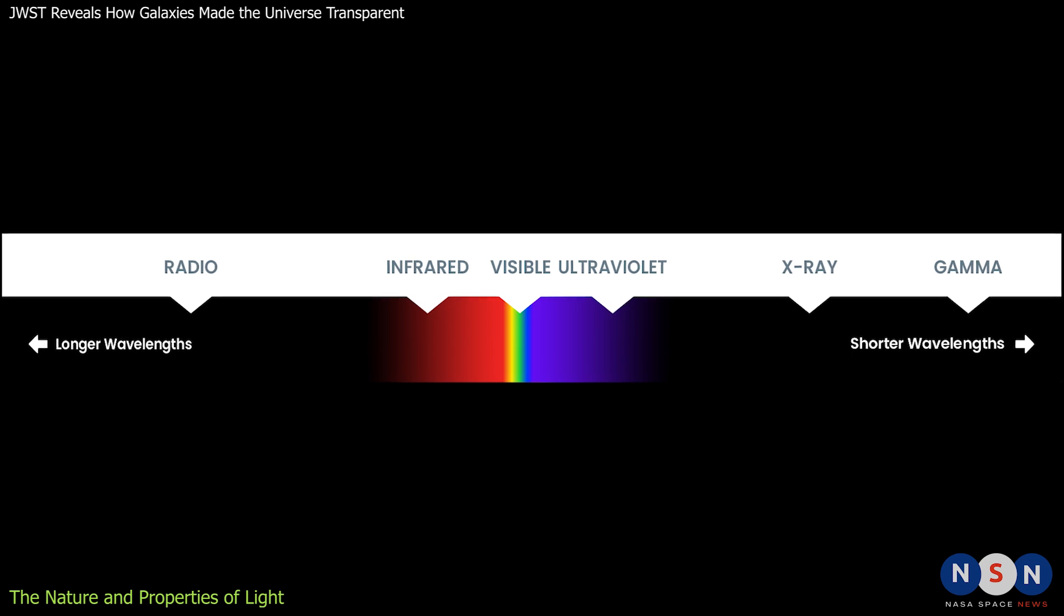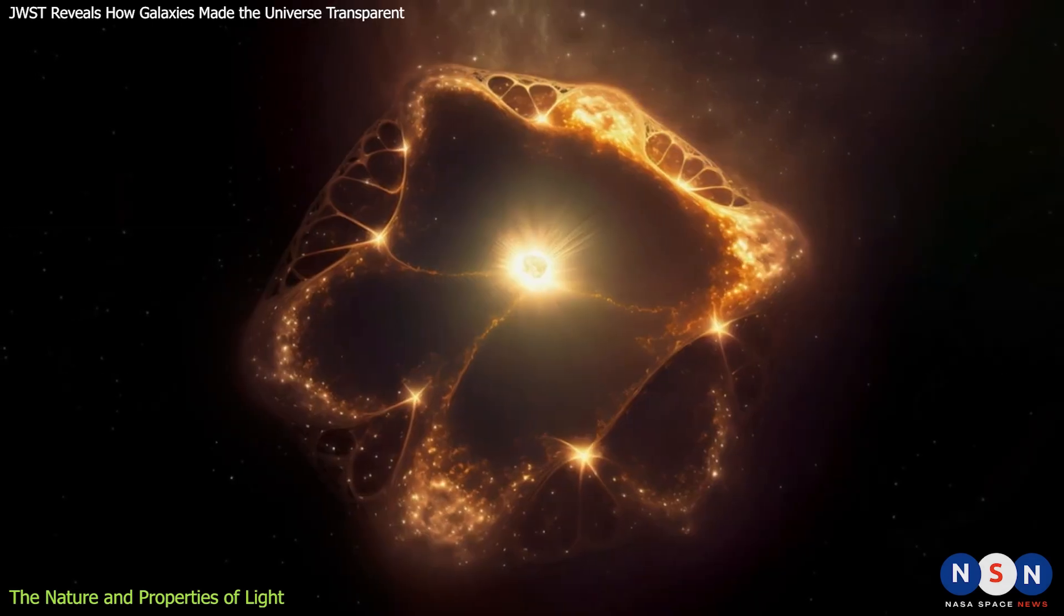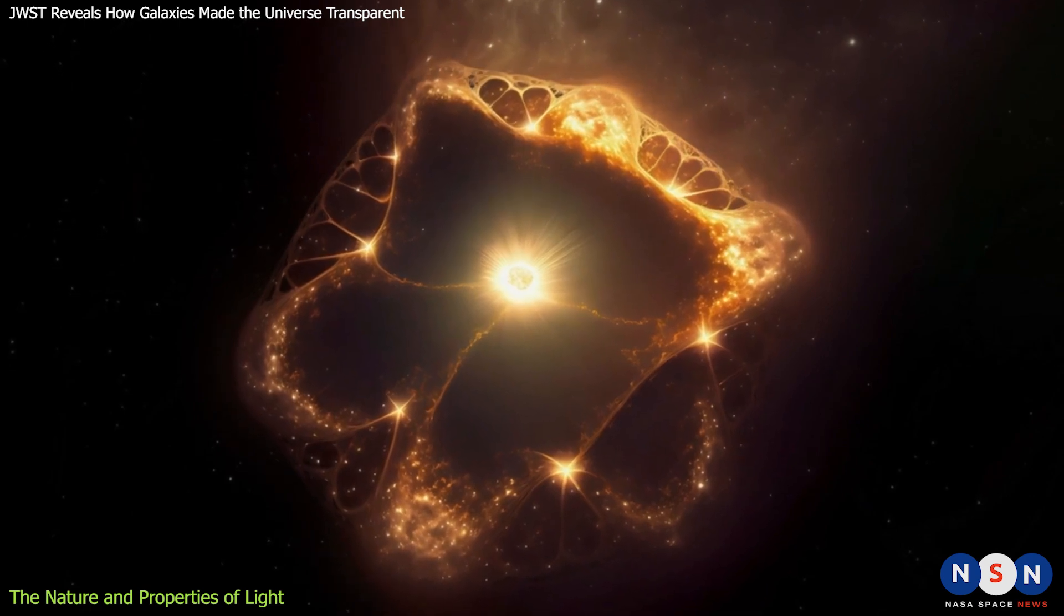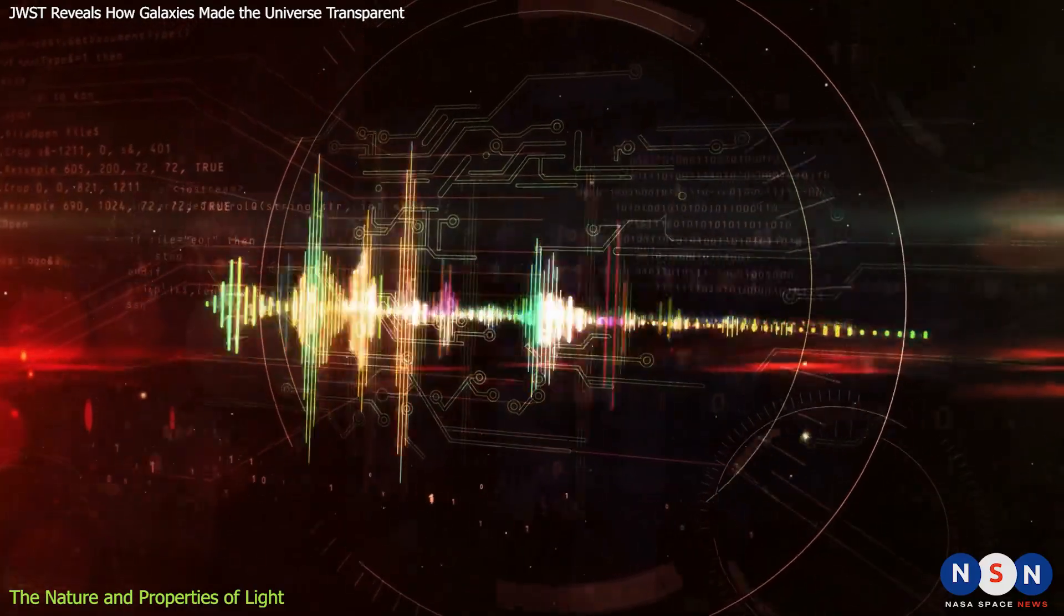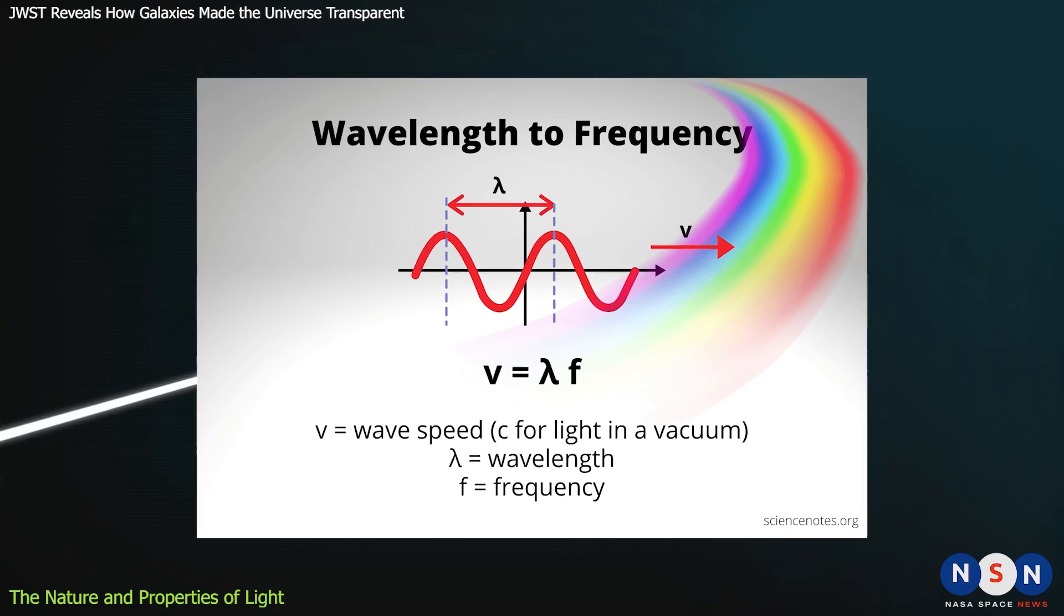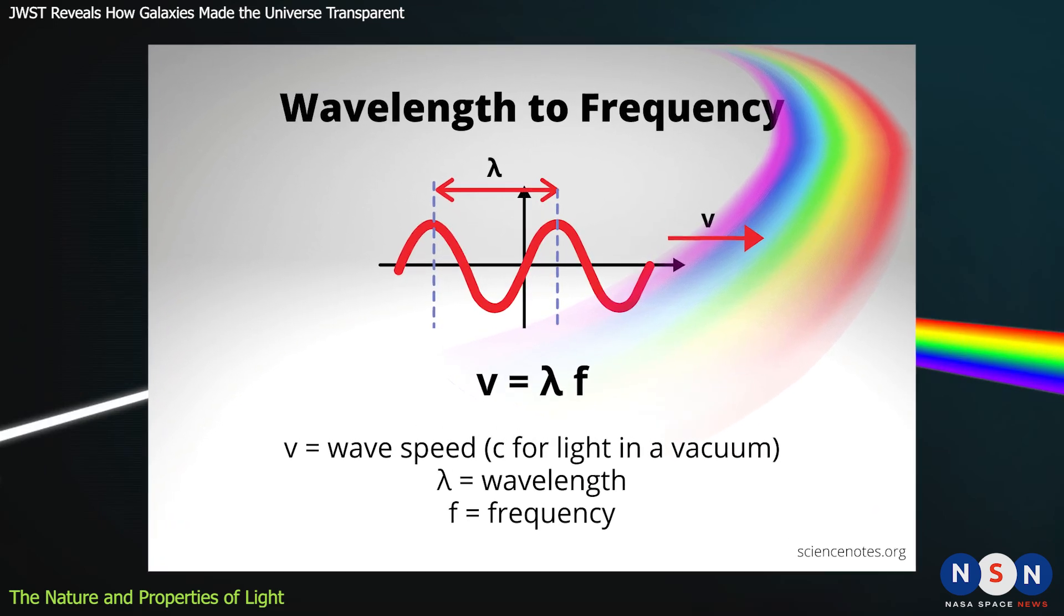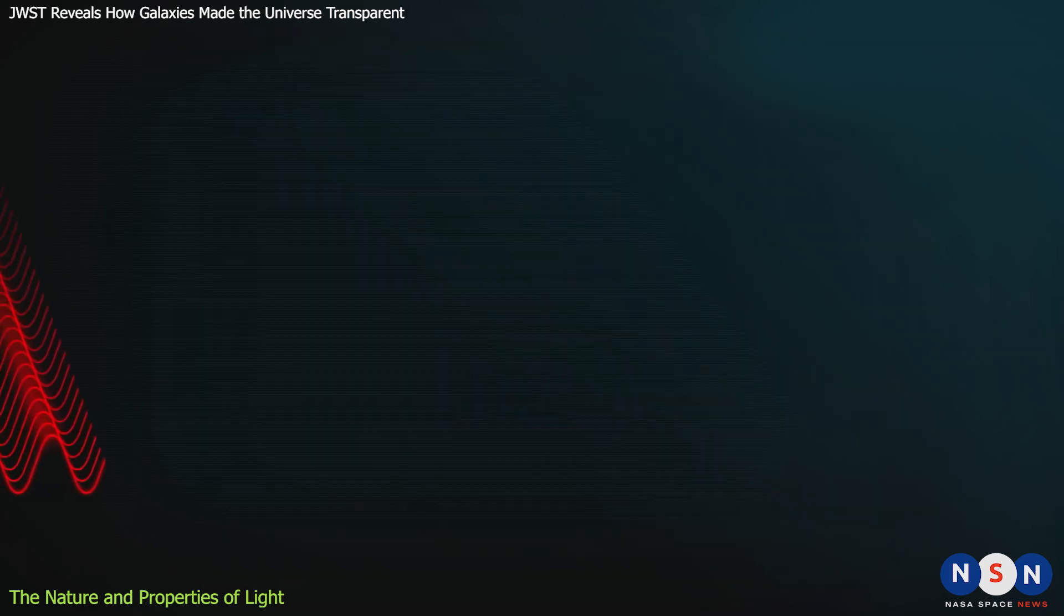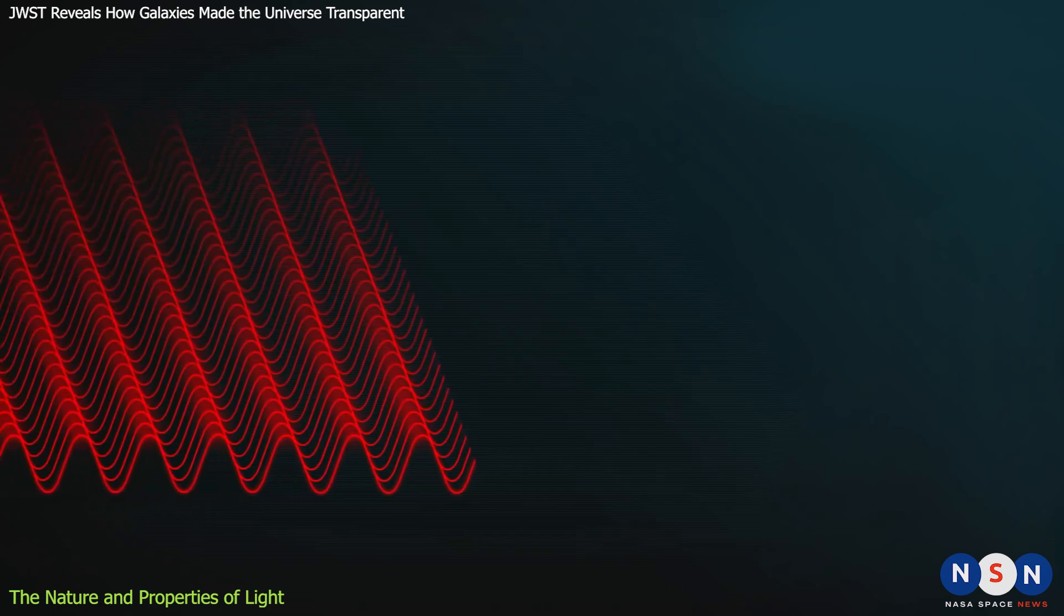These types of light have wavelengths that are either longer or shorter than the visible spectrum, and they have different energies and effects on matter. Another concept that we need to know is frequency, which is the number of waves that pass a certain point in a given time. Frequency is related to wavelength by a simple equation: frequency times wavelength equals the speed of light.